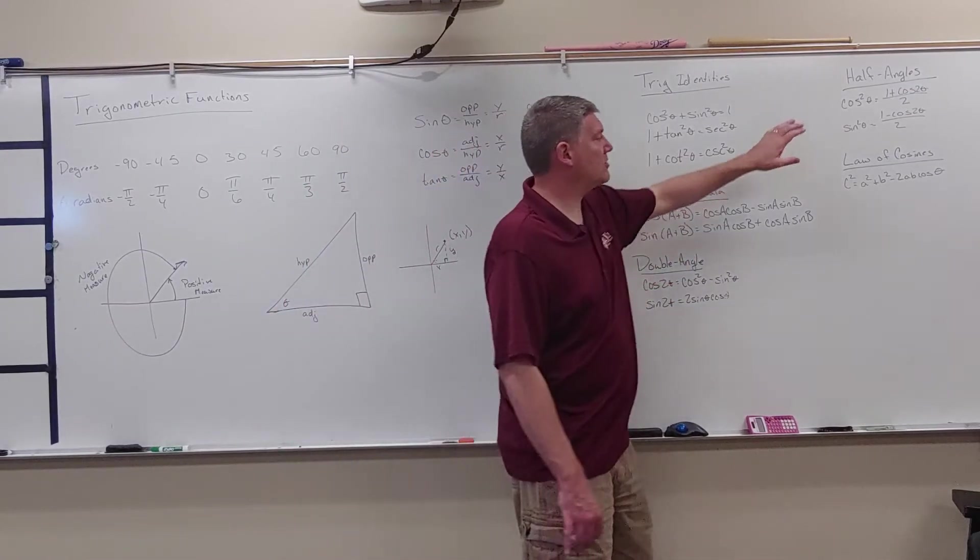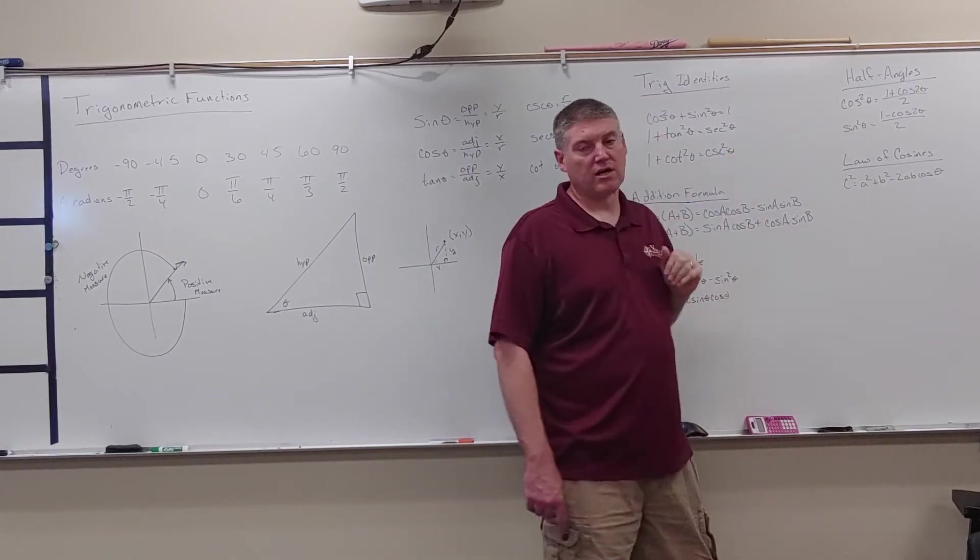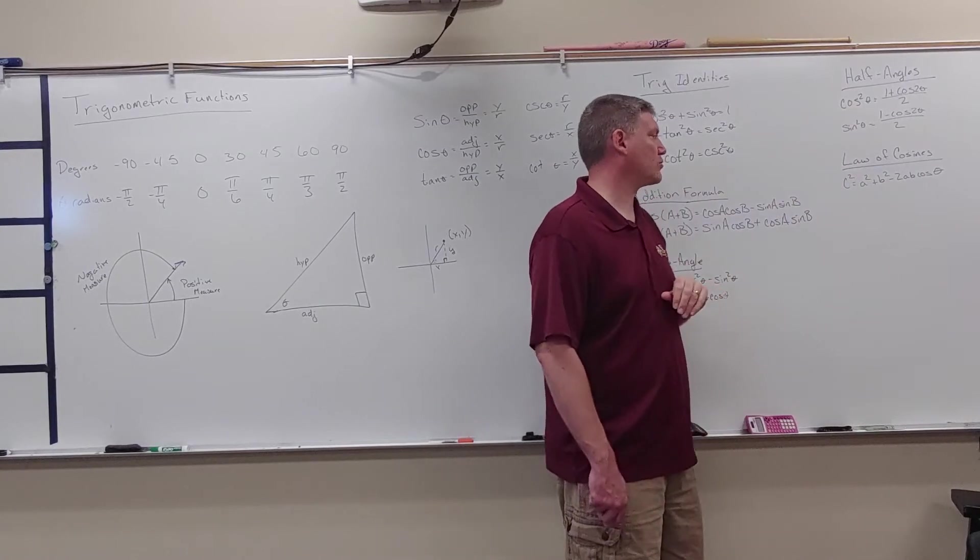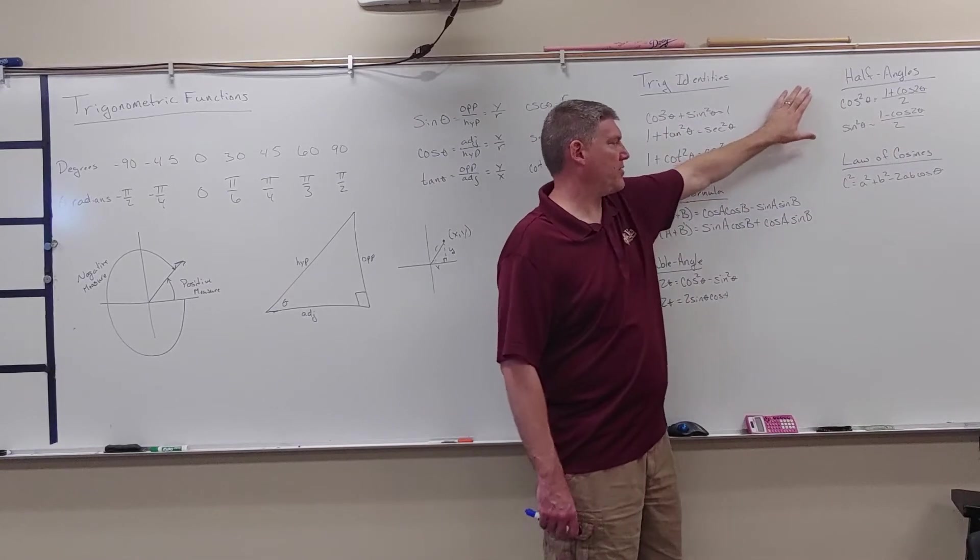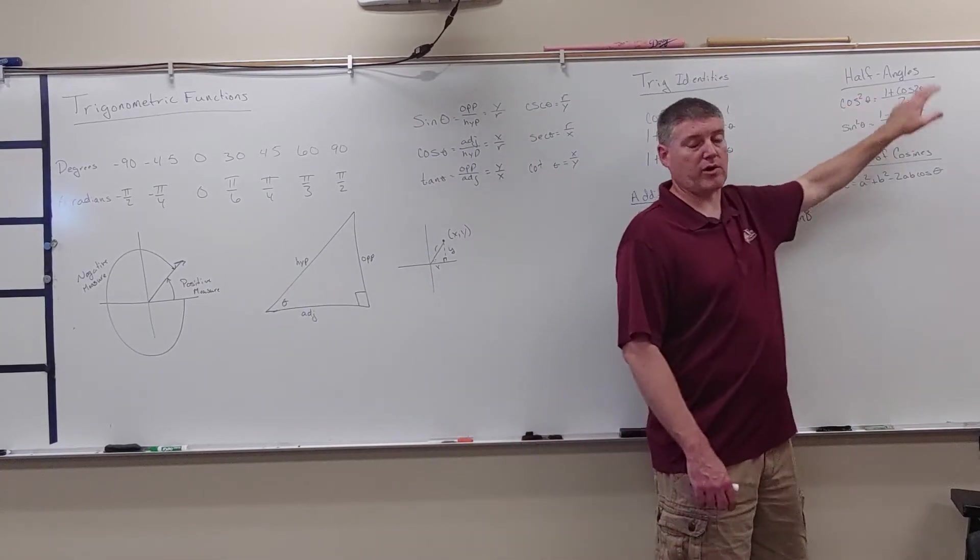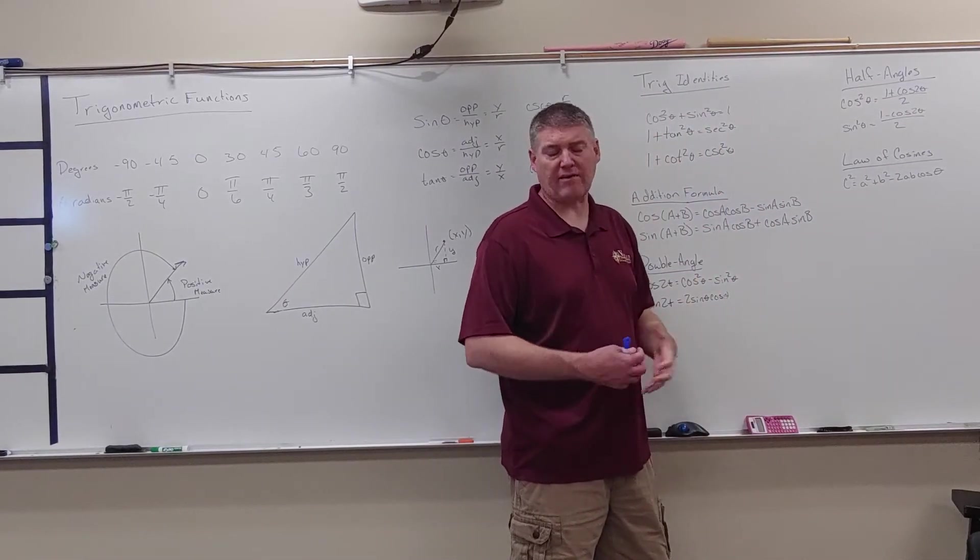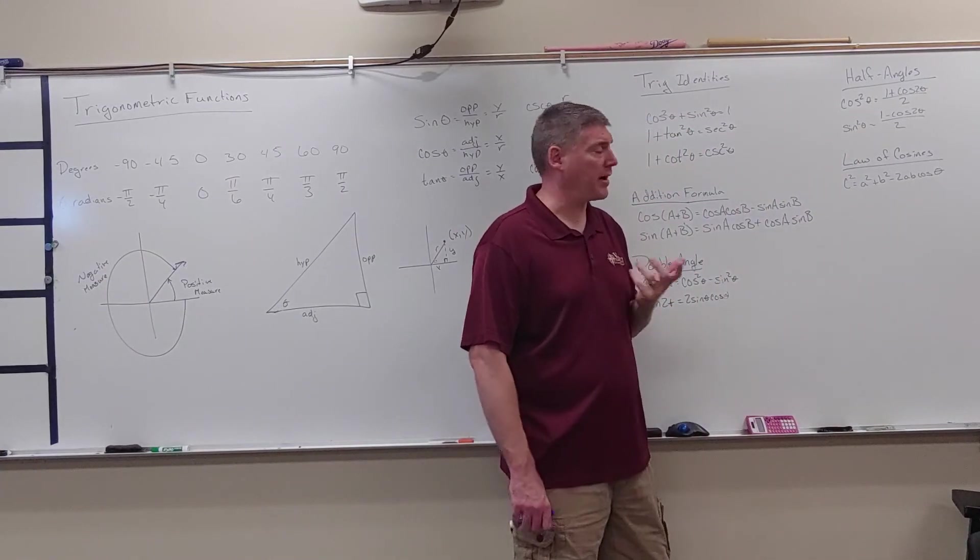And then our half angles here, I have cosine squared equals 1 plus cosine of 2 theta over 2, and sine squared equals 1 minus cosine of 2 theta over 2. If you remember these back from your trig, you might have seen them with square roots here. We're squaring that formula and manipulating it to get it to cosine squared.